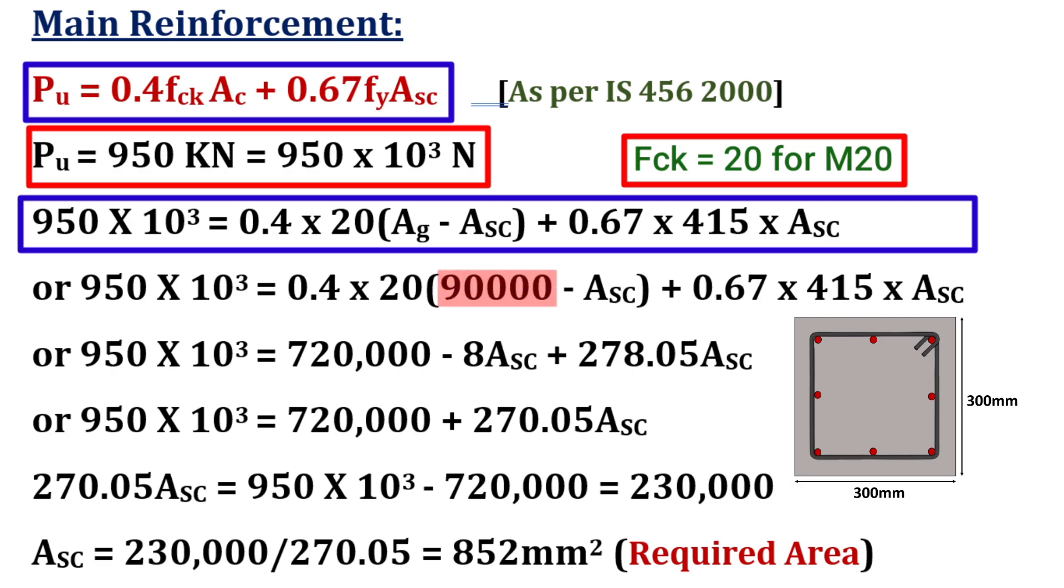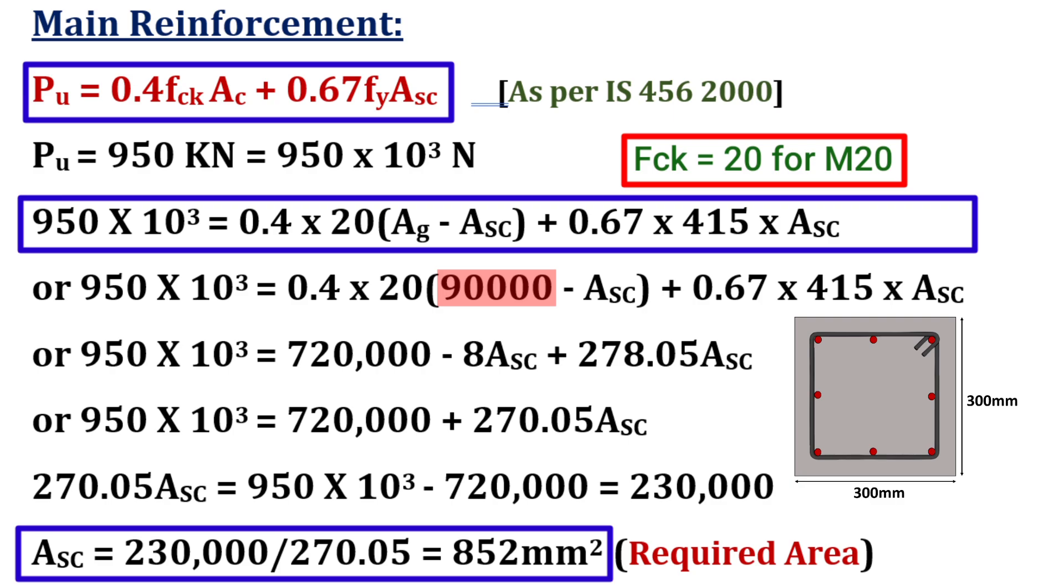After putting the value of Ag equal to 90,000 mm square, we get the value of Asc equal to 852 mm square, which is the required area of steel.